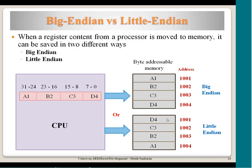In little-endian, the processor takes the least significant byte of the register and saves it at the lowest address, with remaining bytes stored at increasing addresses. There is no concrete rule that one is better than the other. Big-endian stores the highest byte first — so if the highest byte has more value compared to the LSB bits, it is stored first. If the lower bytes are stored first, it is called little-endian.